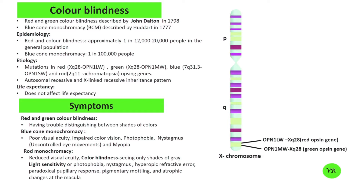In humans, there are three types of colour blindness: red-green colour blindness, blue-yellow colour blindness, and complete colour blindness. The Ishihara Test, Anomaloscope, and Farnsworth-Munsell 100 Hue Test are used for colour blindness diagnosis.